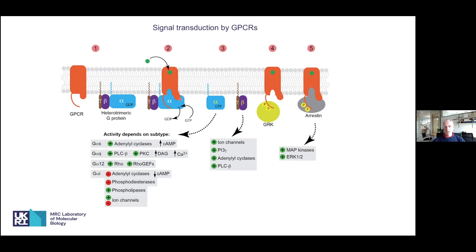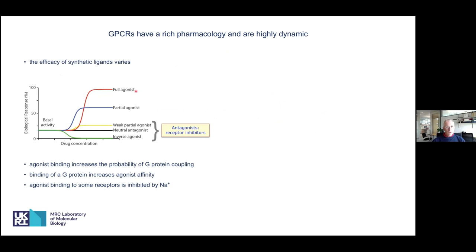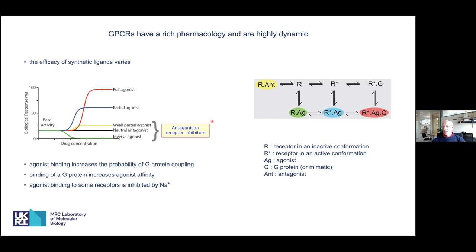We're going to be talking about ligand efficacy. In terms of biological response, a full agonist — think adrenaline or noradrenaline — gives 100% biological response. A partial agonist gives a partial response even with full occupancy, only turning the receptor on partially. Antagonists can be divided into subgroups depending on their activity: weak partial agonist, neutral antagonist, or inverse agonist. It's only the inverse agonist that really fully inhibits basal activity.